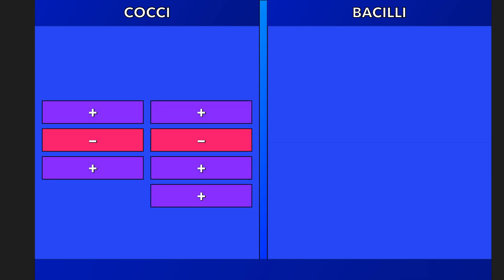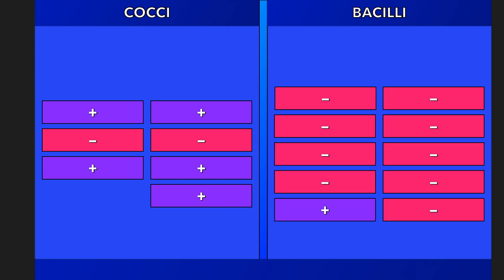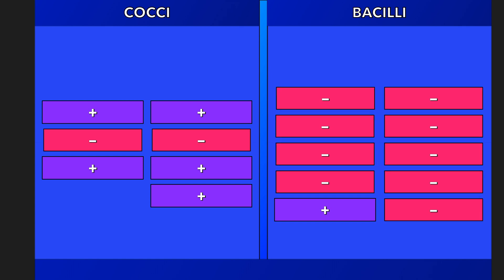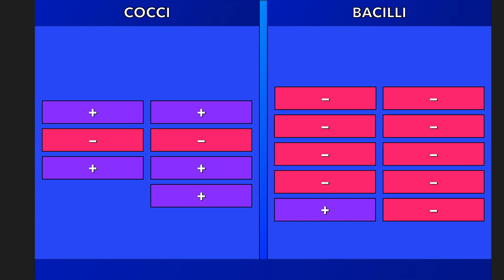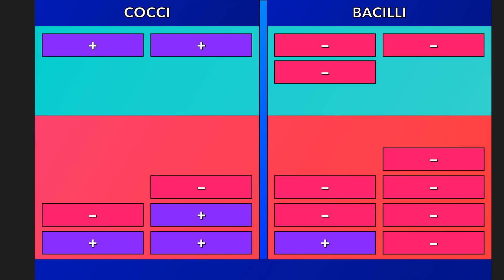For each generation, we will display several important organisms that may or may not be susceptible to that group of cephalosporins. Cocci will be found on the left, while bacilli will be on the right. Organisms in purple boxes are gram-positives, while the gram-negatives are in the pinkish boxes. If susceptible to a particular generation of cephalosporins, the organism will lie within the green area, while those that are not will be in the red area. While there are always exceptions, we will look at the most widely accepted patterns of antimicrobial activity.